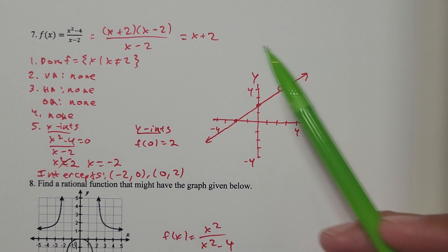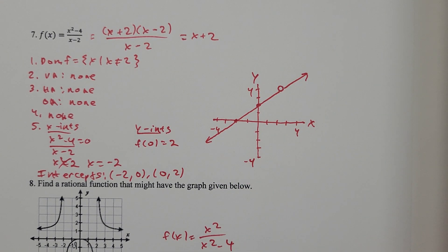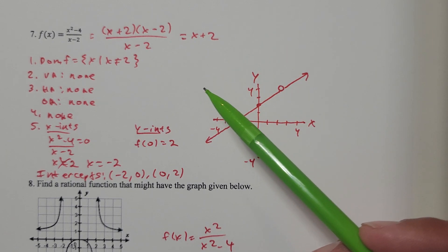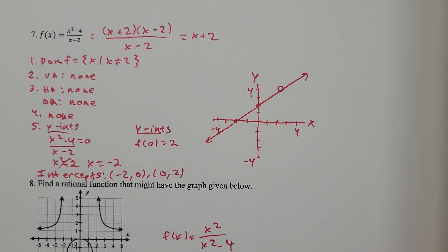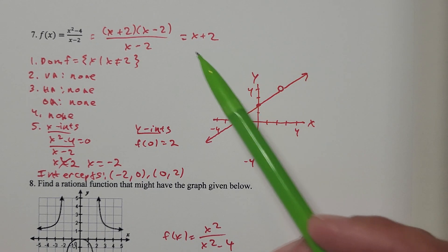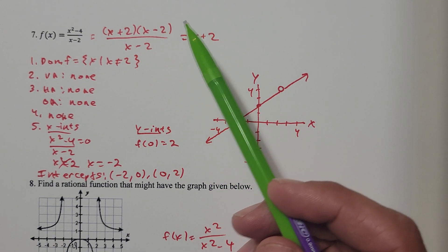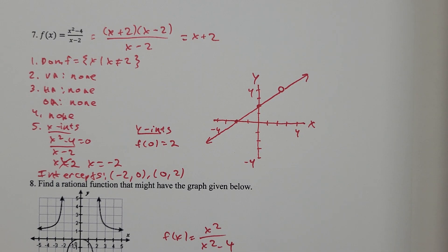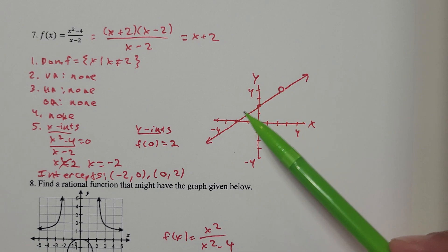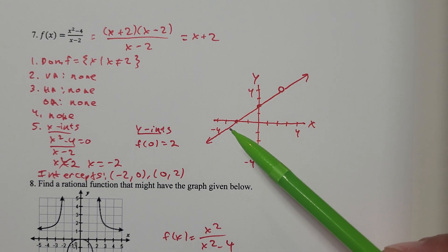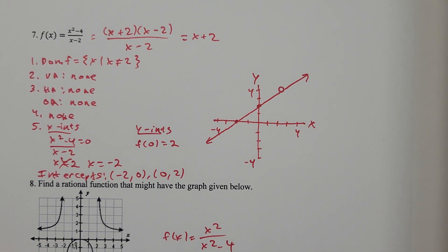In general, any factors that cancel in the numerator and denominator means you're going to have holes in the graph at those spots. For example, if I had a totally different function with an x plus 5 in the numerator and an x plus 5 in the denominator, those would cancel, and I would have a hole in the graph when x is negative 5 — there would not be any vertical asymptote there.